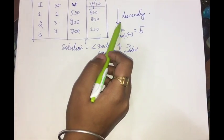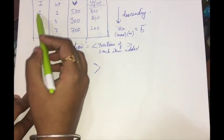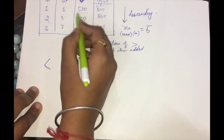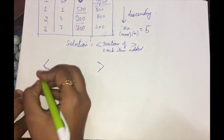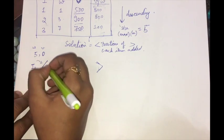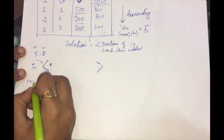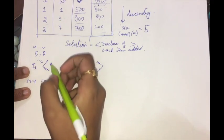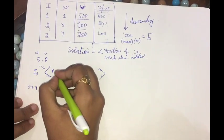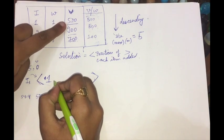We start adding items to the bag based on the v/w ratio. The initial weight capacity is 5 and the value is 0. When item 1 is added, the value becomes 500 and the remaining weight becomes 5 minus 1 equals 4. The entire item 1 is added, so the fraction for item 1 is 1.